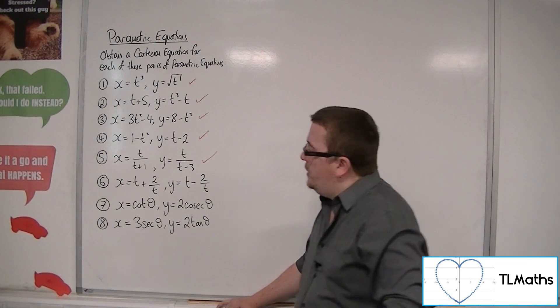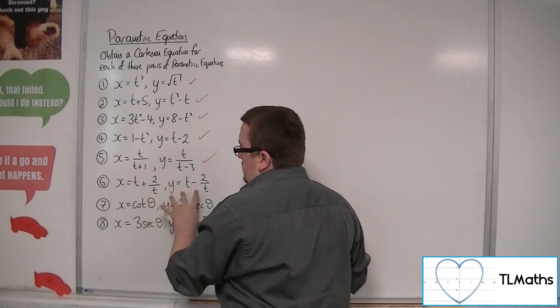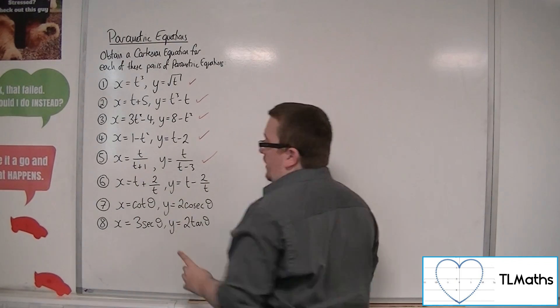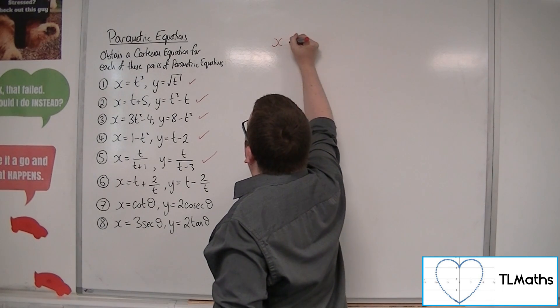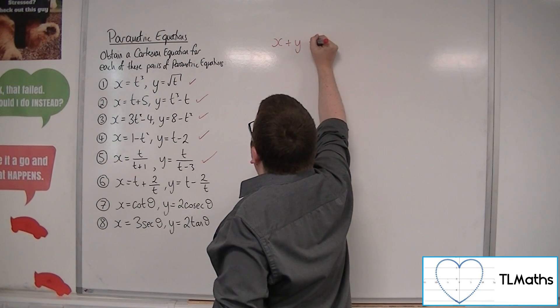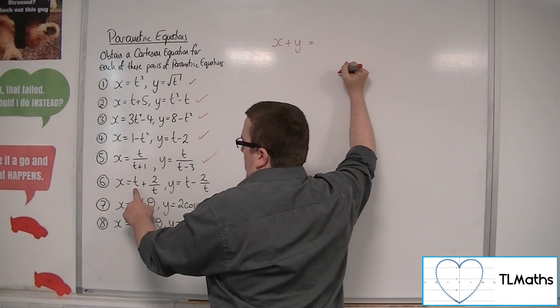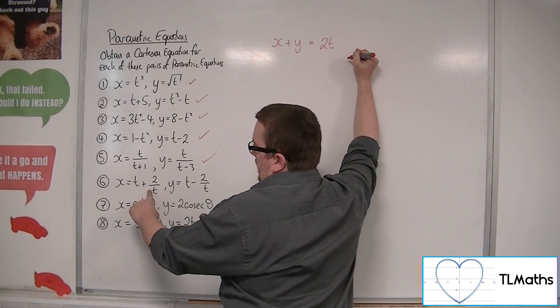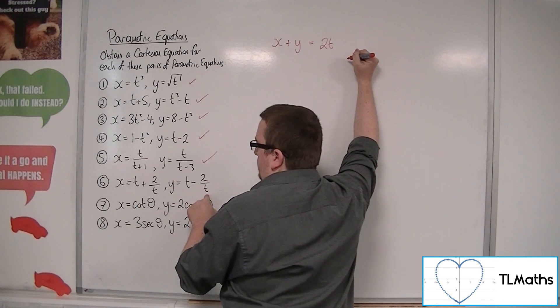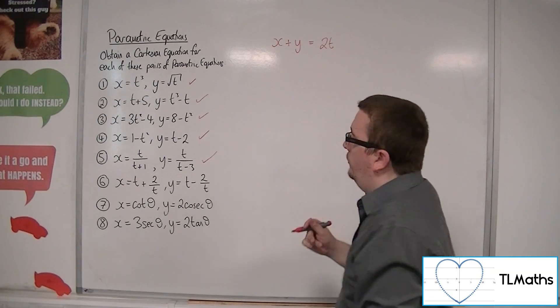Because if you notice that actually you've got the same two elements, but 1 is plus, 1 is minus, then what you can think about is, well, if I add the x and the y together, I'm going to get t plus t, so 2t, and I'm going to have 2 over t plus negative minus 2 over t, so they cancel each other out. So, x plus y is equal to 2t.